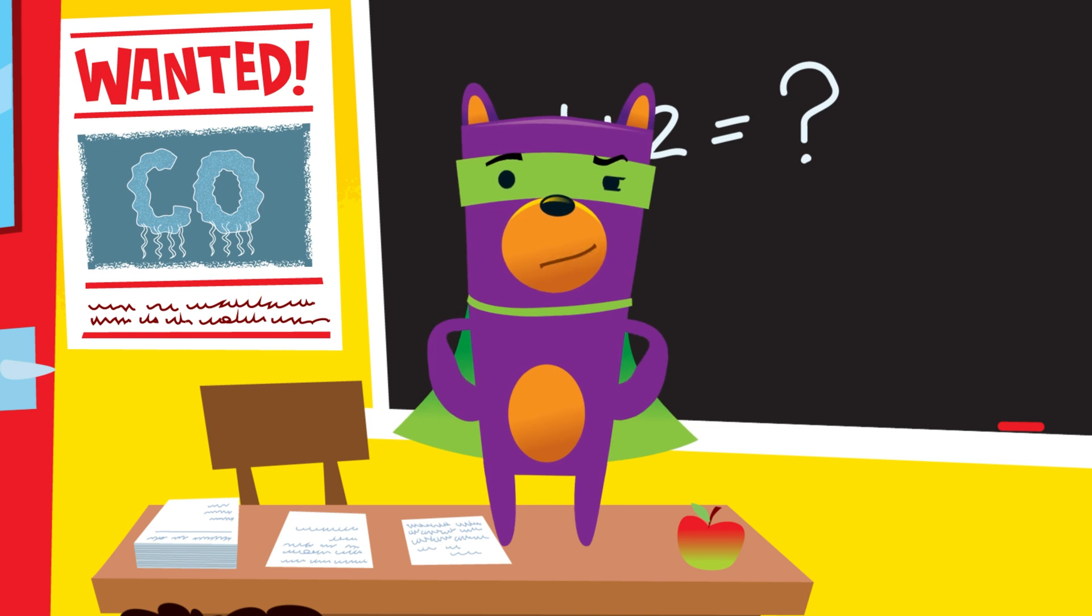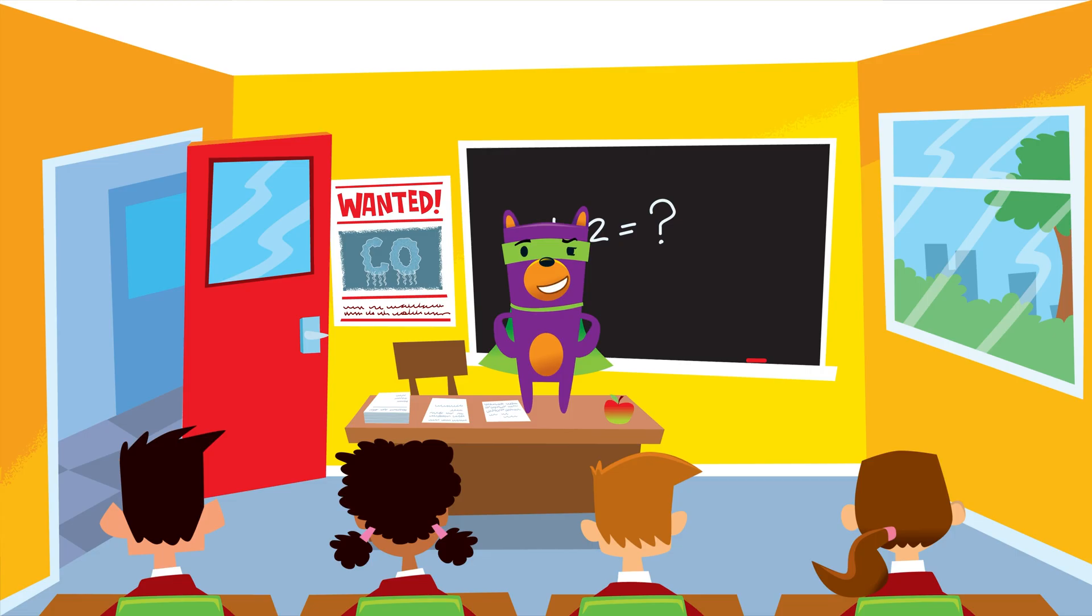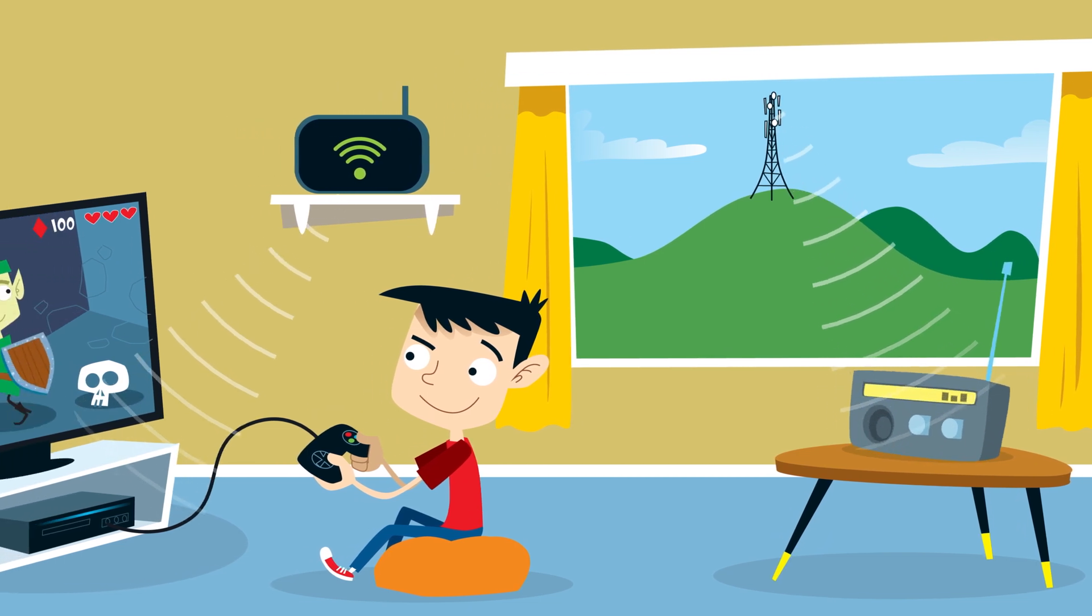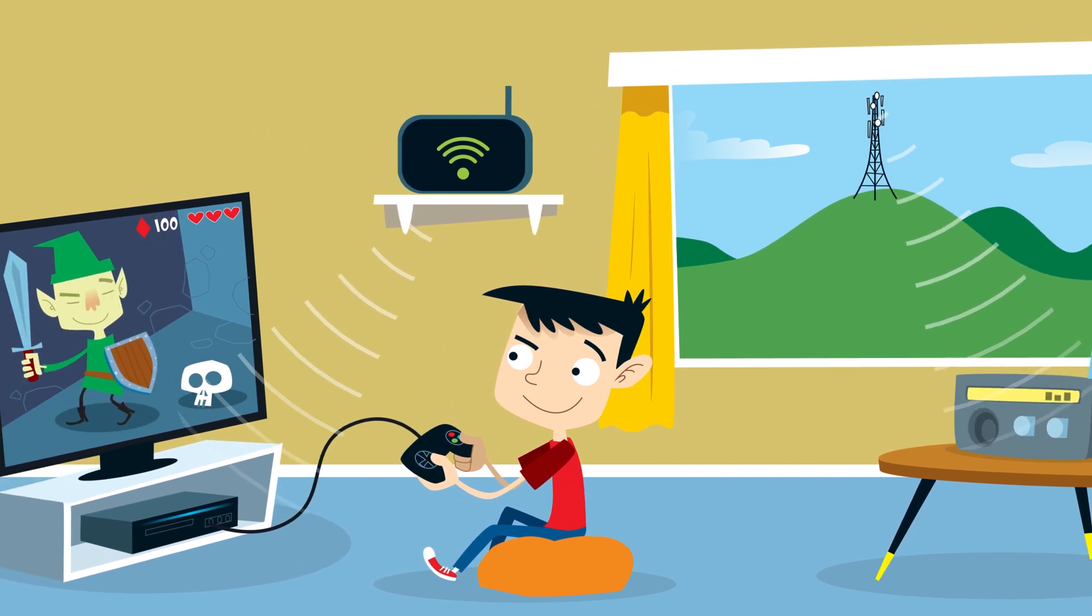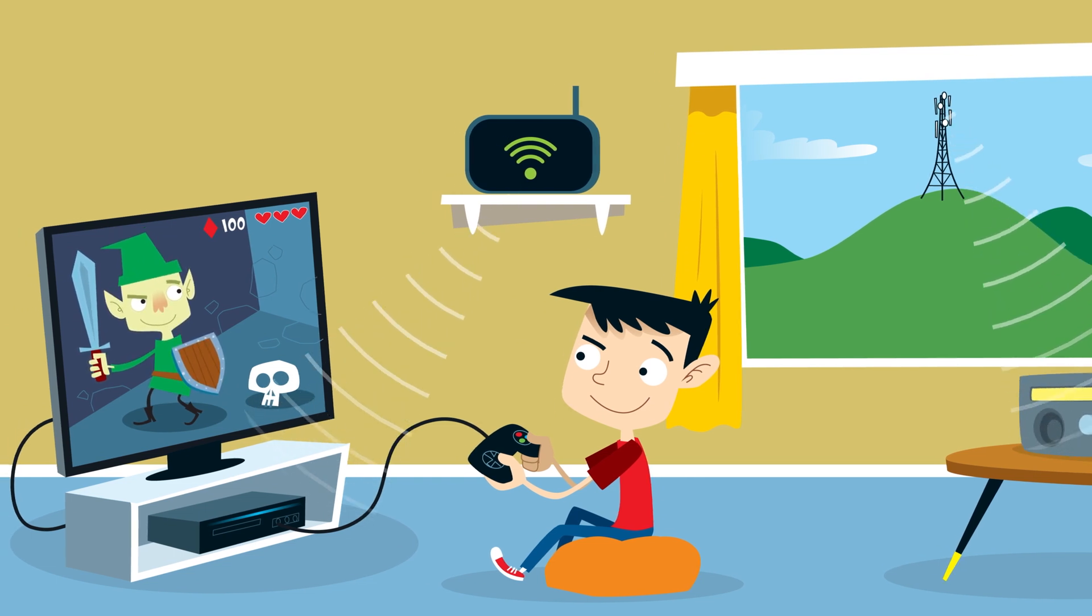But what about dangers that aren't so easy to see? If you can't see something, doesn't that mean it's not there? Not always. Think about it. We're surrounded by radio waves and wifi to play our favourite games and listen to music. But we can't see those waves, can we?